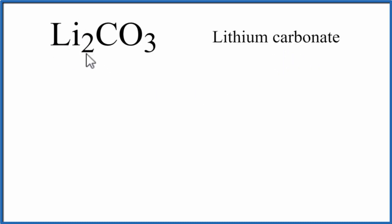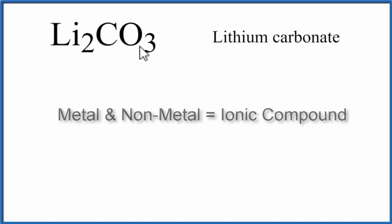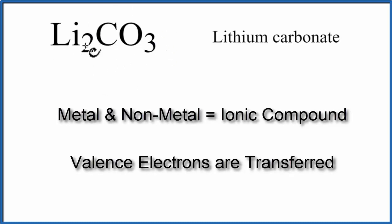We first need to realize that Li is a metal, and CO3 is a group of non-metals. It's the polyatomic ion called carbonate. When we have metals and then a non-metal, that's going to be an ionic compound, and these metals will transfer their valence electrons to the non-metals.